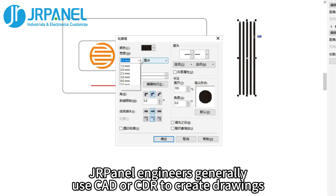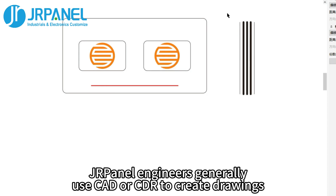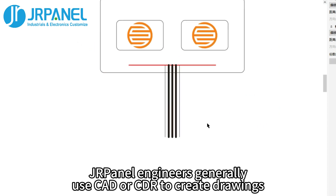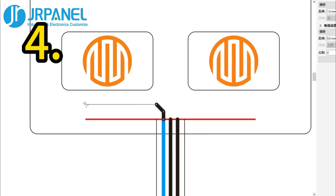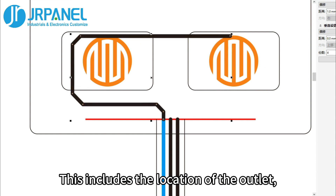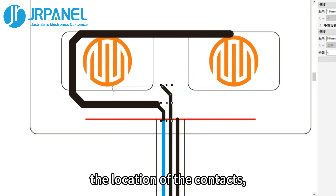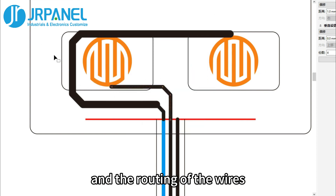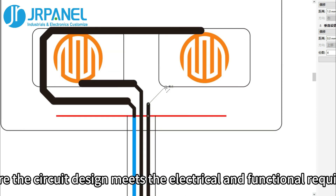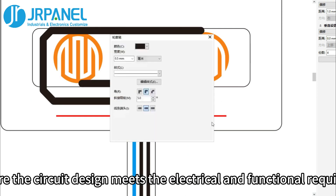JR panel engineers generally use CAD or CDR to create drawings. Fourth, circuit layout. This includes the location of the outlet, the location of the contacts, and the routing of the wires. Make sure the circuit design meets the electrical and functional requirements.